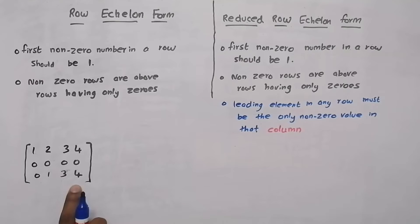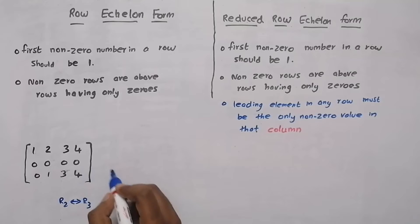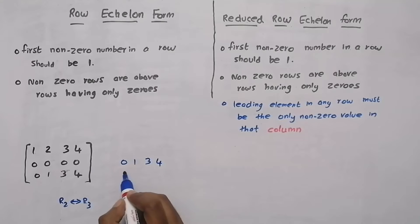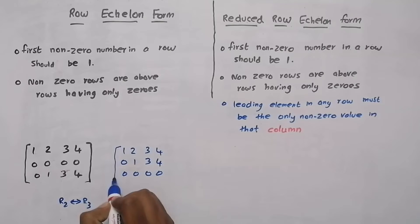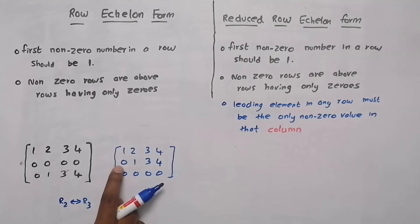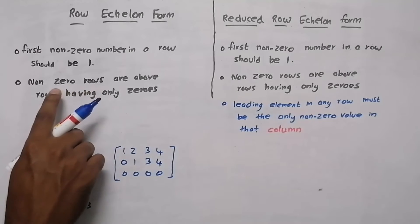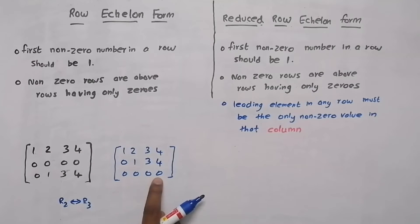So, to convert this matrix into row echelon form, we must interchange R2 and R3. Our new R2 will be 0, 1, 3, and 4. And R3 will be 0, 0, 0, and 0. R1 remains the same: 1, 2, 3, and 4. Now check: the first non-zero value in each row is 1, and non-zero rows are above the row having only 0s. So this is row echelon form.